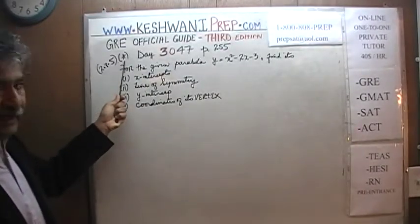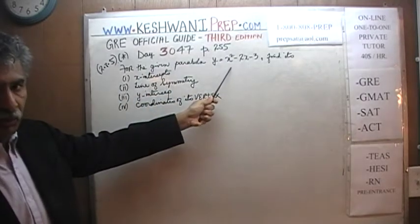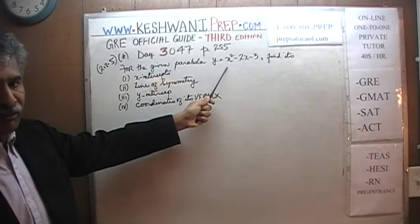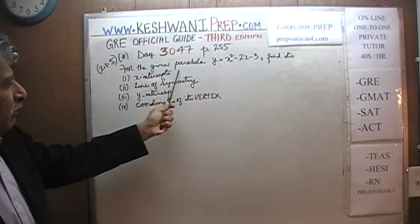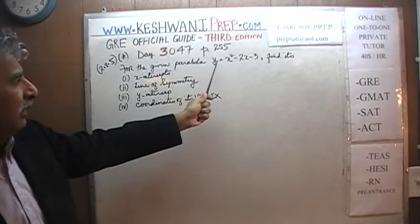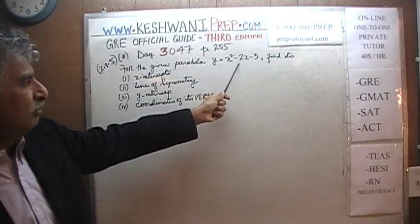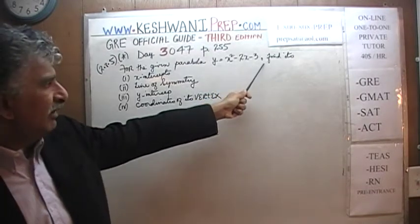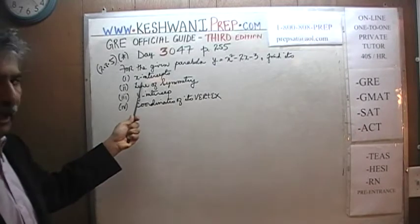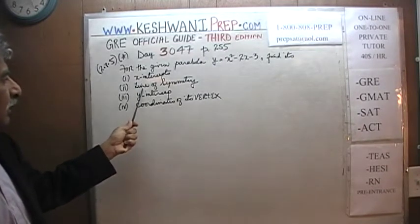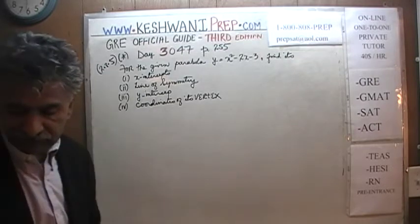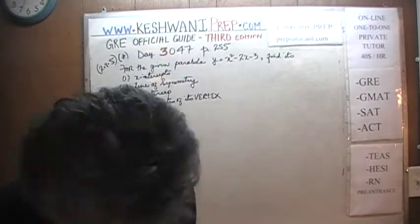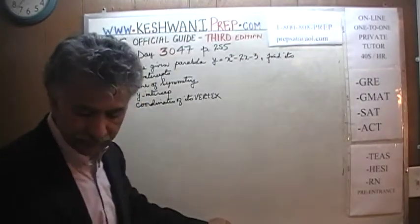So here we go. This being the first one, 2.8.5 A, which is the same one as the one you see in the book. B and C, if we do anything extra, are of course not in the book. Here is what the problem says: for the given parabola, Y is equal to X squared minus 2X minus 3. Our job is to find its X-intercept, Y-intercept, and its vertex.